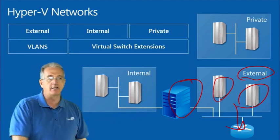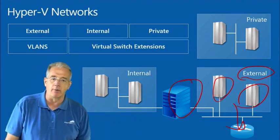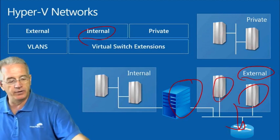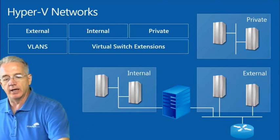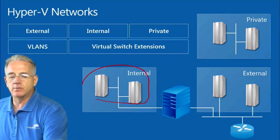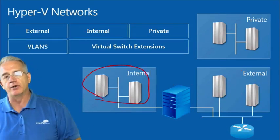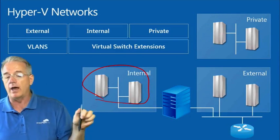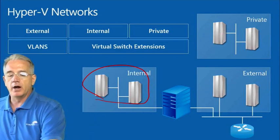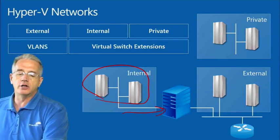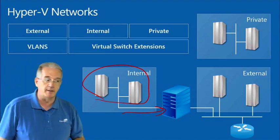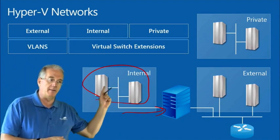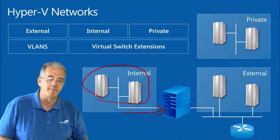If you have computers that you want people in your network to access, you would set it up as an external network. An internal network allows virtual machines on that host to communicate with each other, as long as they're joined to that same internal network, and it also allows you to communicate with the host machine.